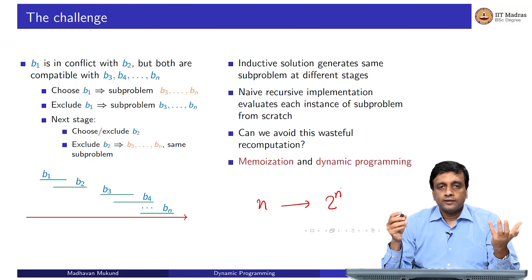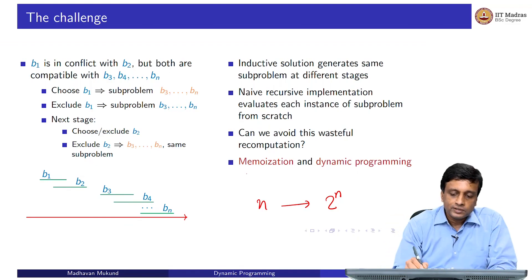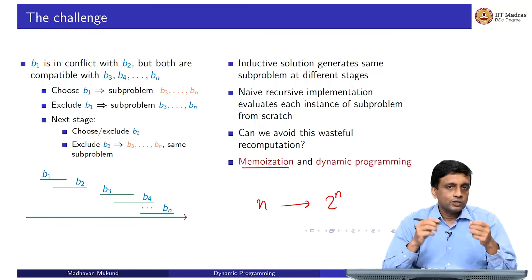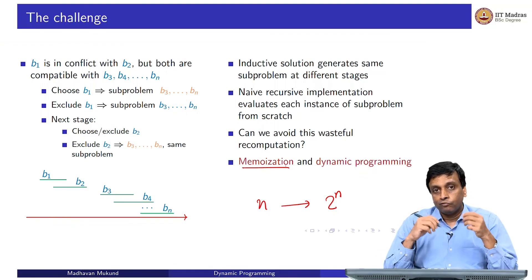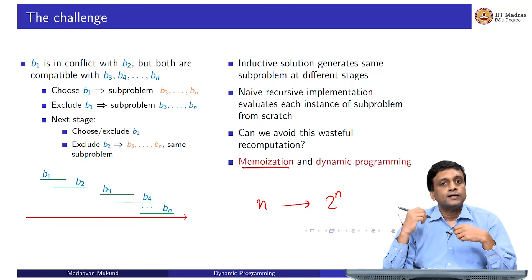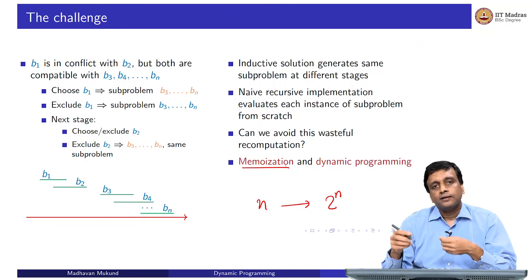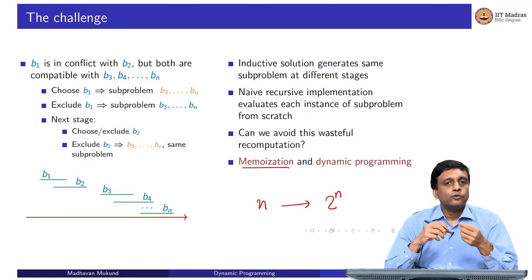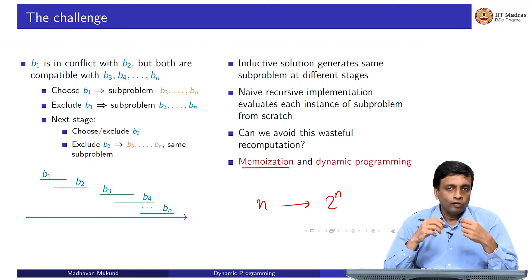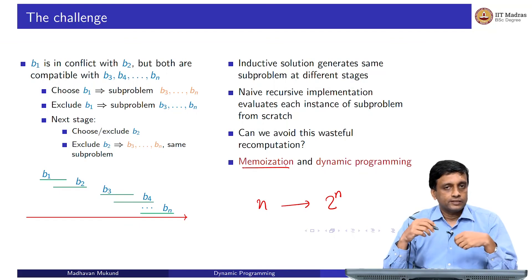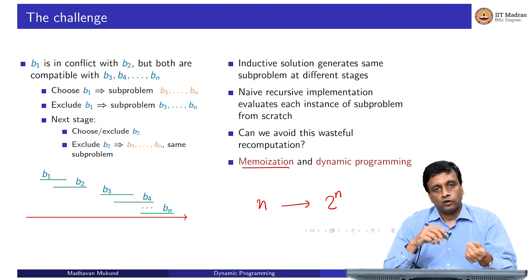We will look at two strategies to address this. The first is memoization: when we encounter a problem we have seen before, we reuse the previously computed answer. The other is dynamic programming: we solve sub-problems in an order such that whenever we need one, we already have the answer.